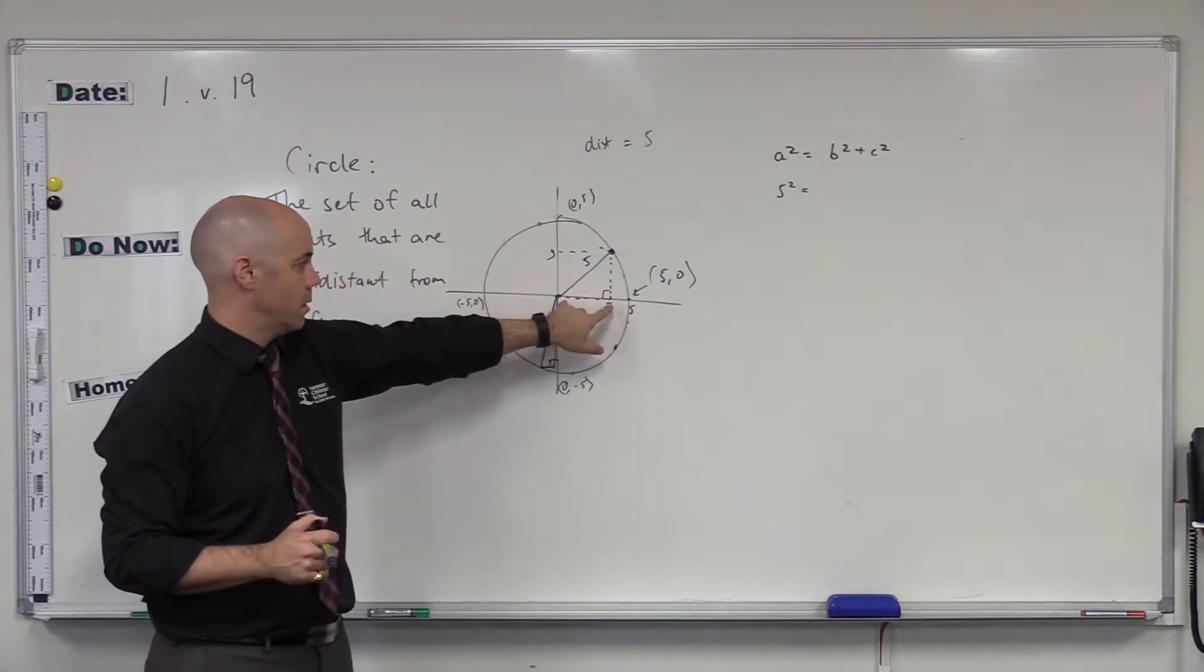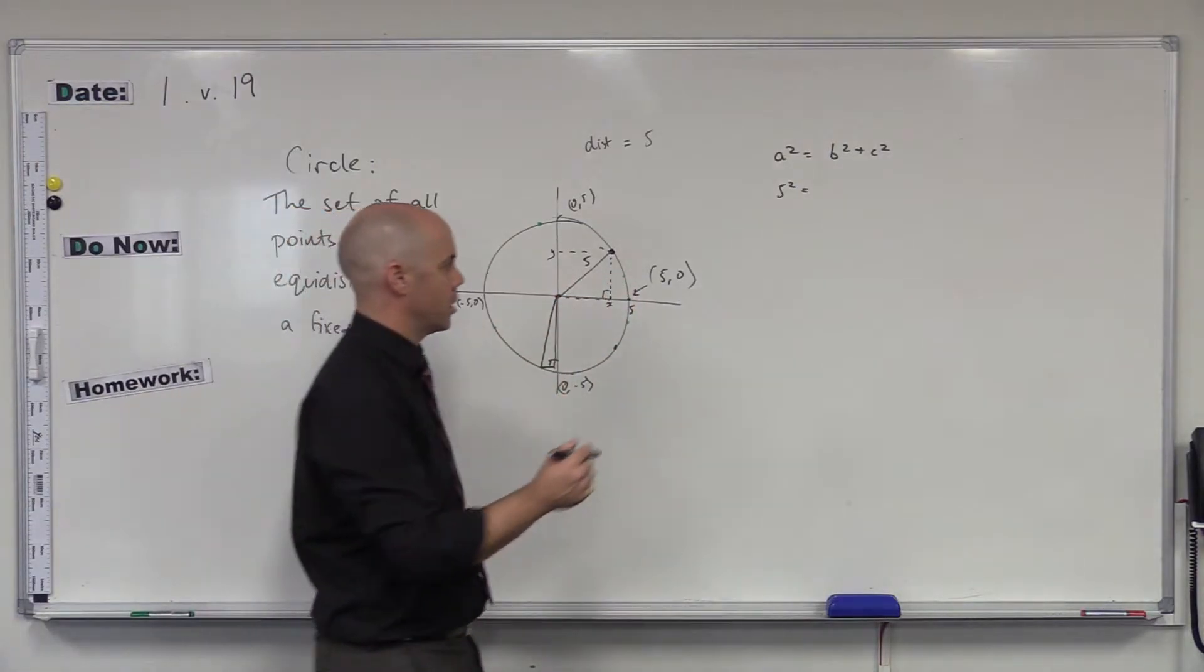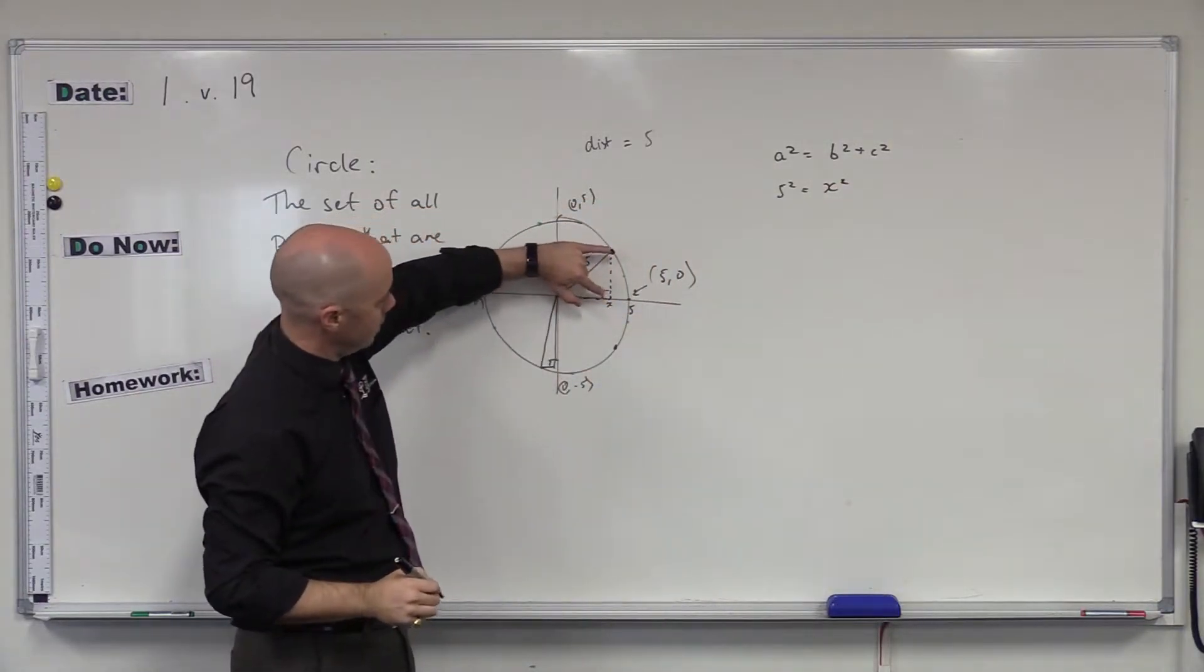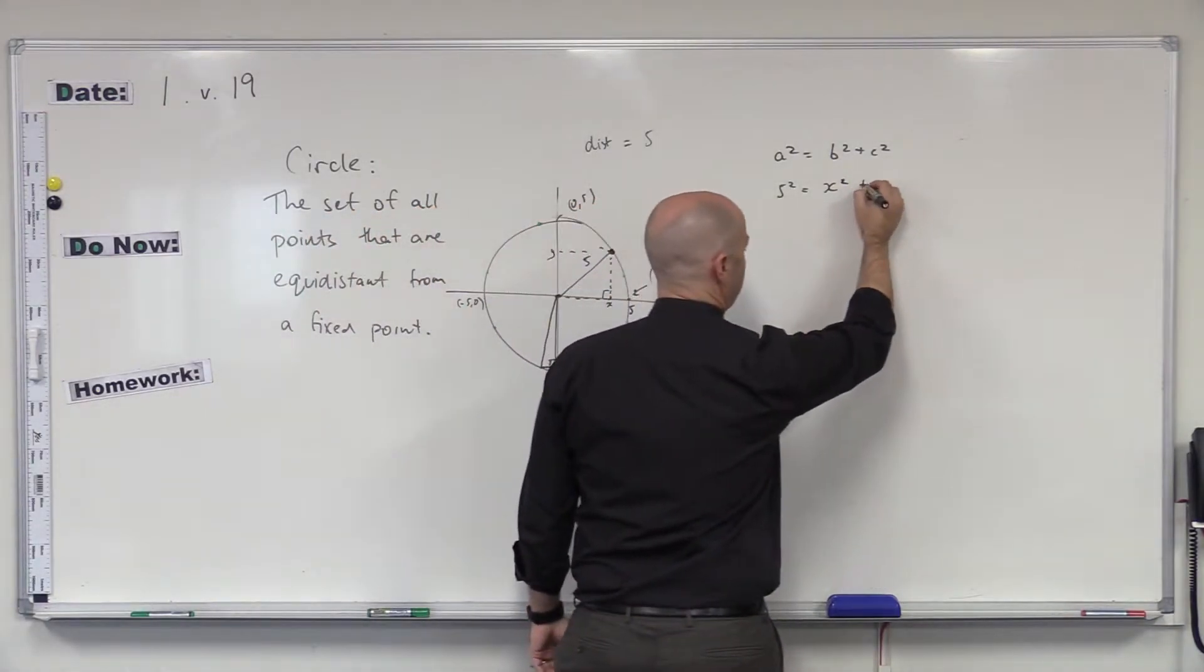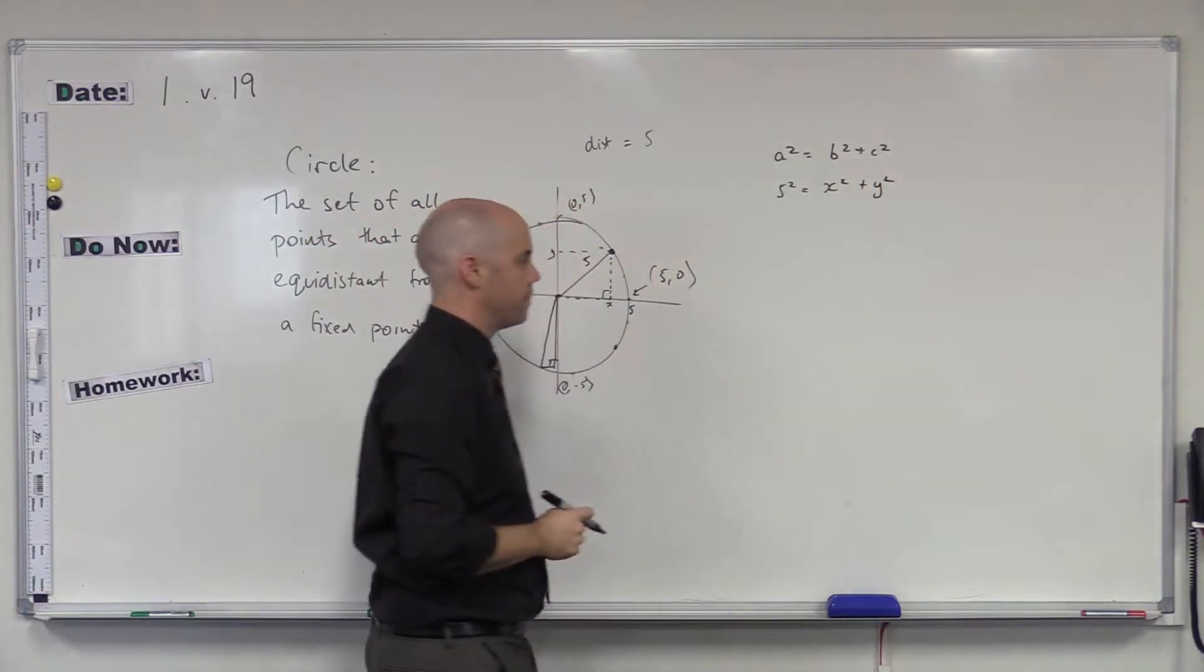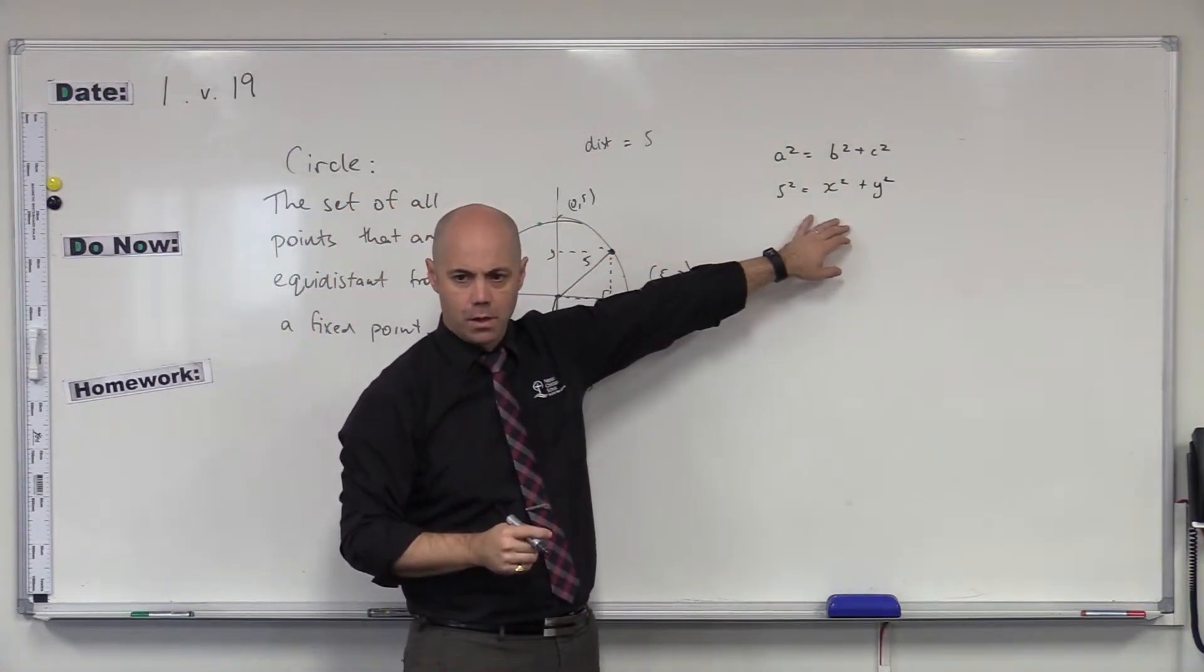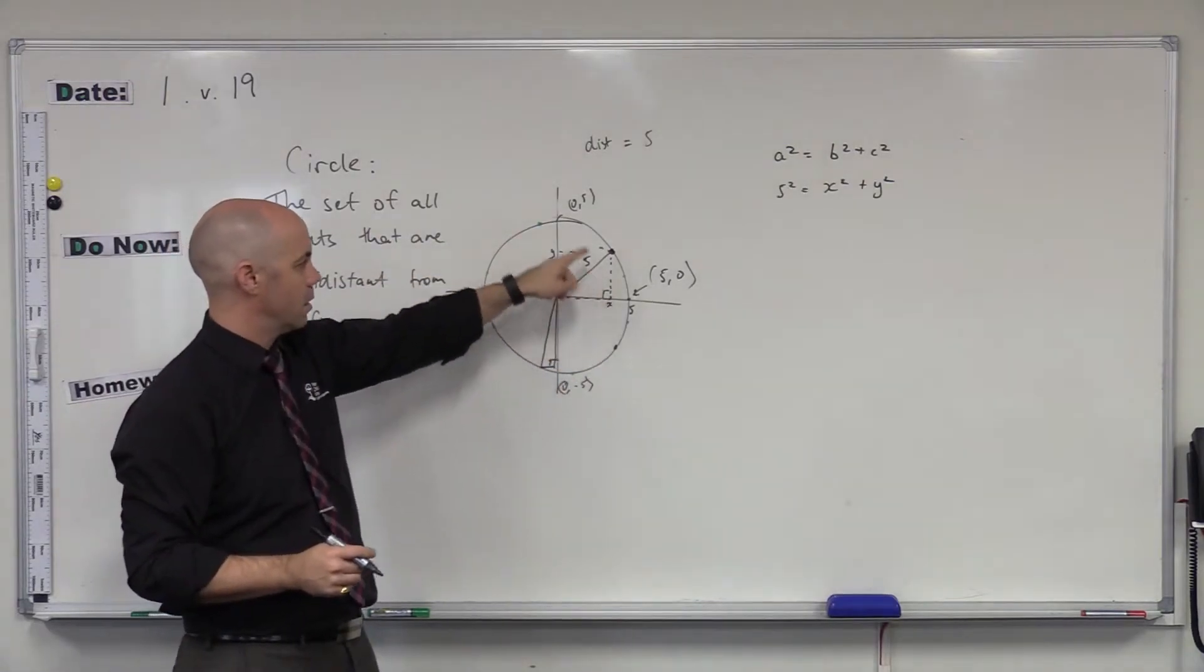What is that distance there? X. It is X, isn't it? Because we're starting from the origin to the point X, and so it's just going to be X. And I'll square that. And what's that distance there? Y. Y. Right, so I'll add that one. Square. That there is the equation that describes all of the points of the circle.